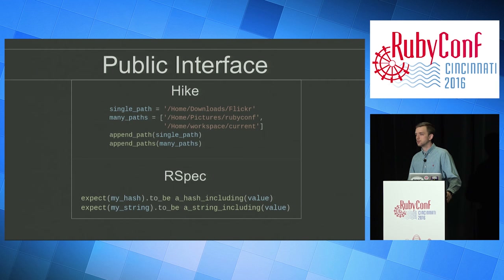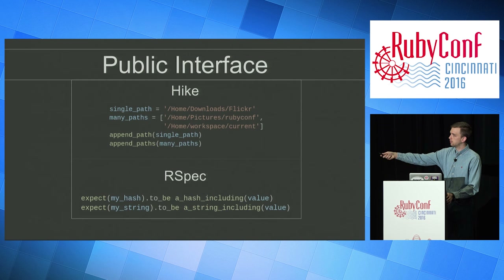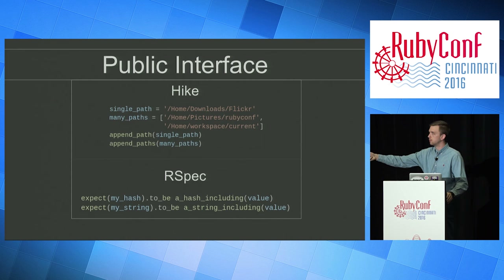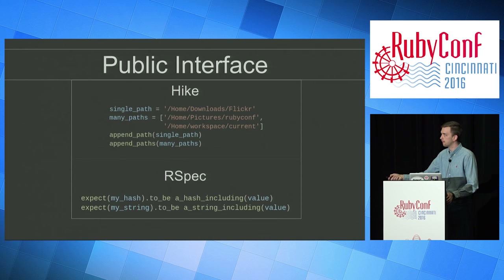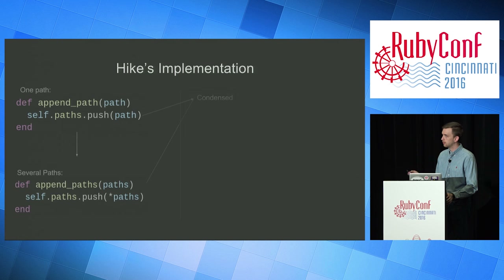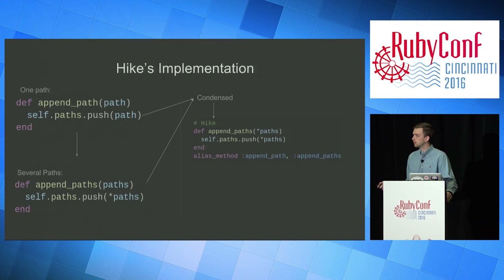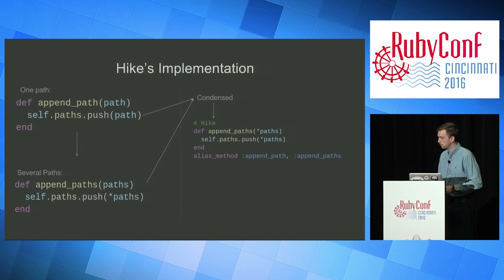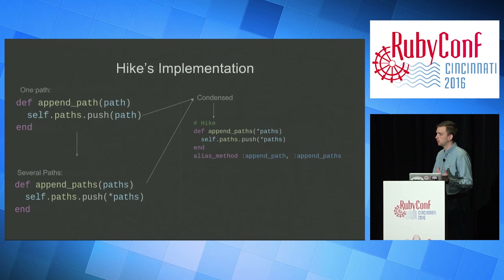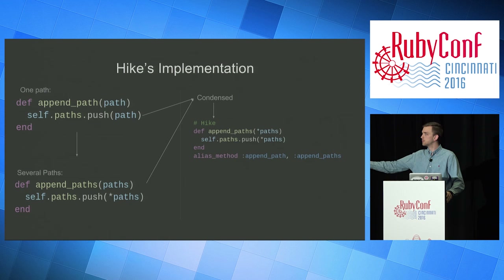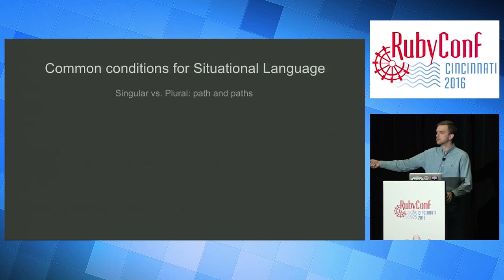Hike allows you to find a file within a set of paths, and RSpec is obviously a testing framework. Both of these instances actually behind the scenes rely on the same method implementation — pin_path and add_path rely on the same implementation, as do hash including and string including. They define one method name and then alias that method name to give the user the opportunity to pass in one value and use a singular method name if they'd like. It makes more sense — it's context specific, it's situational language. Common situations include singular versus plural method names and synonyms.